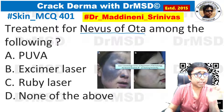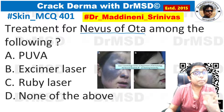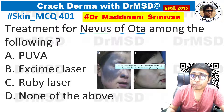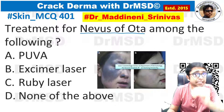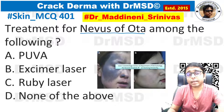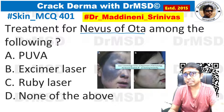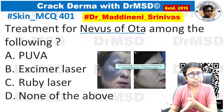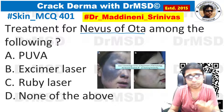I hope you remember Nevus of Ota is an example of dermal melanocytosis in which the melanocytes, which usually should be present in the stratum basale of the epidermis, will instead be present deeper into the skin — in the dermis.